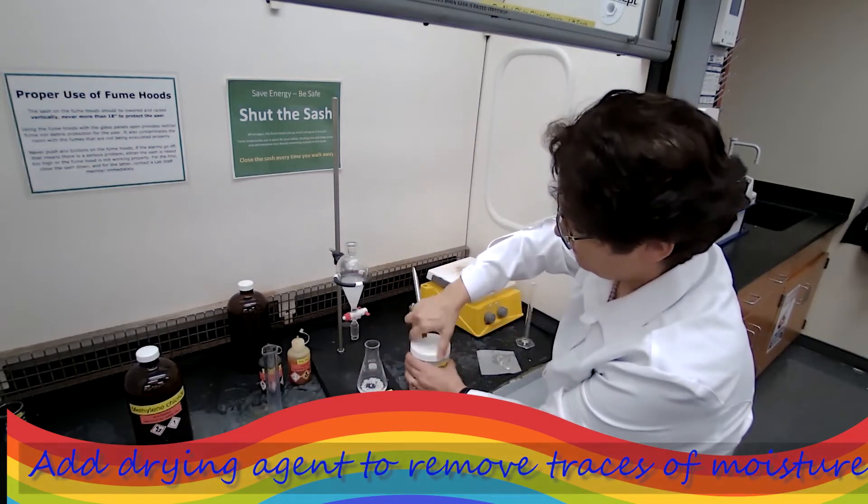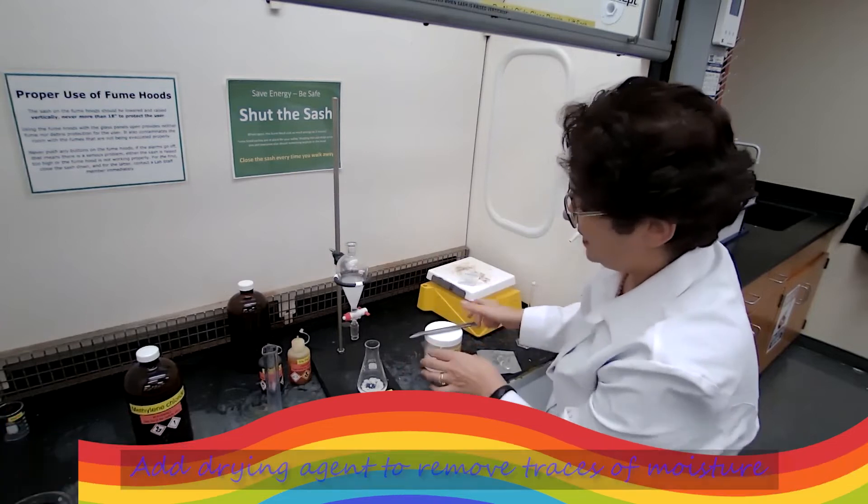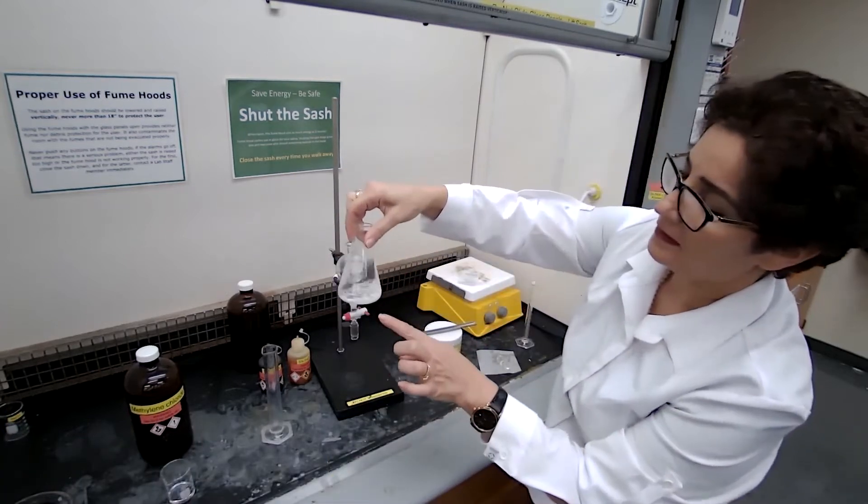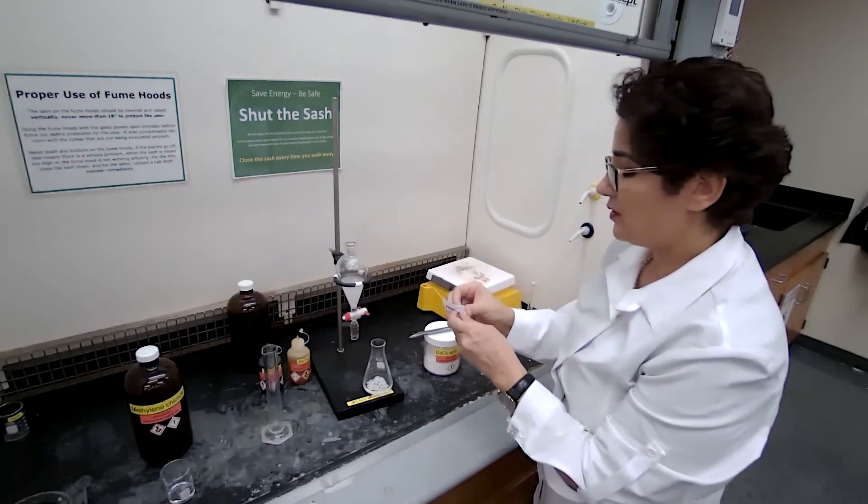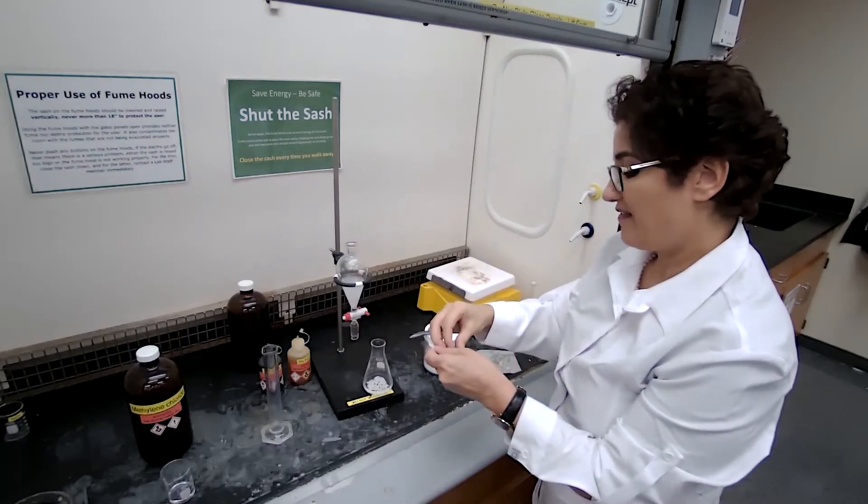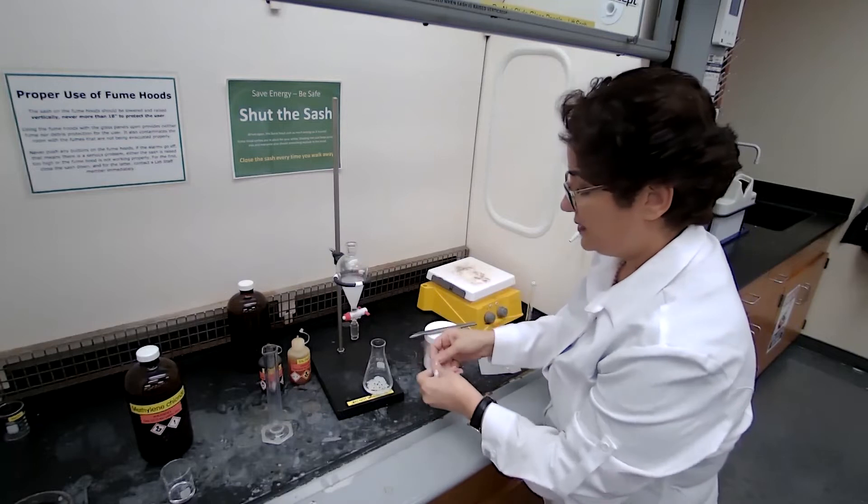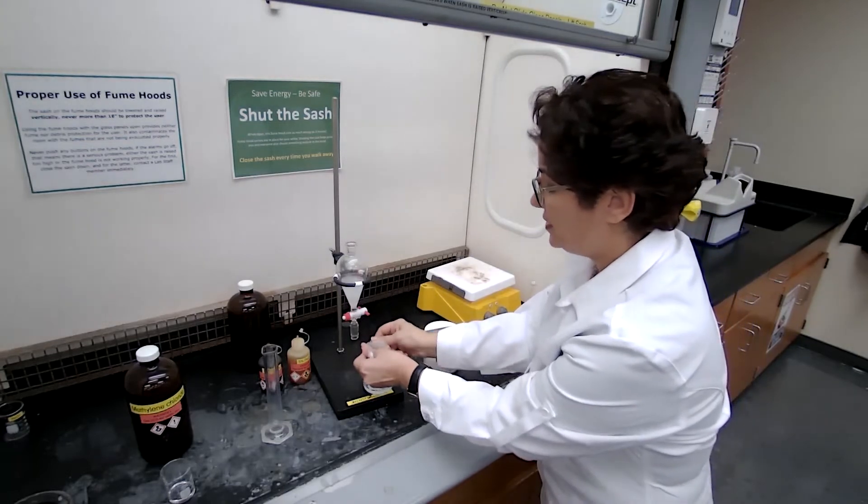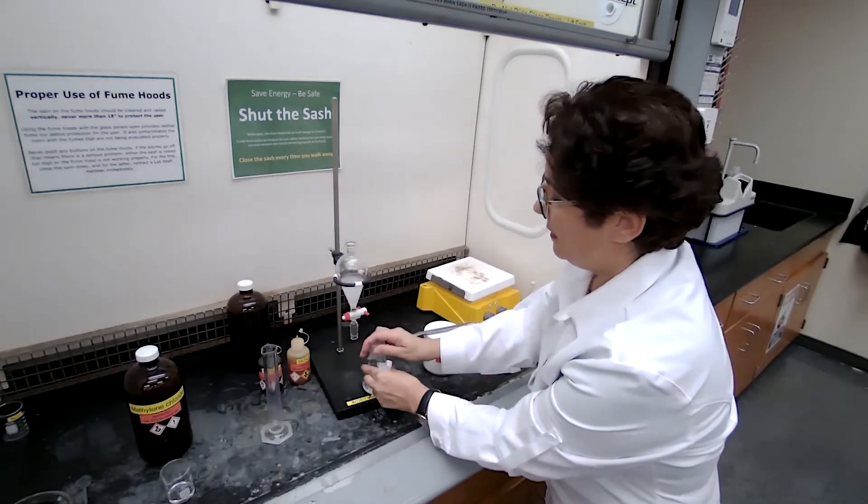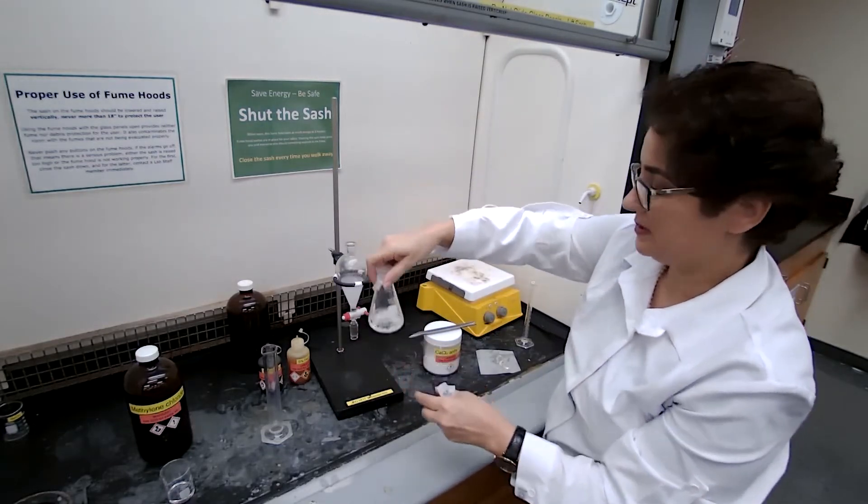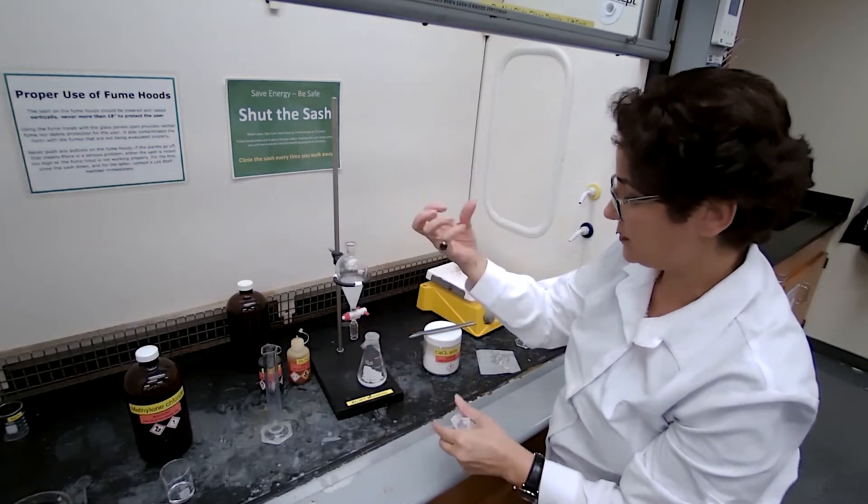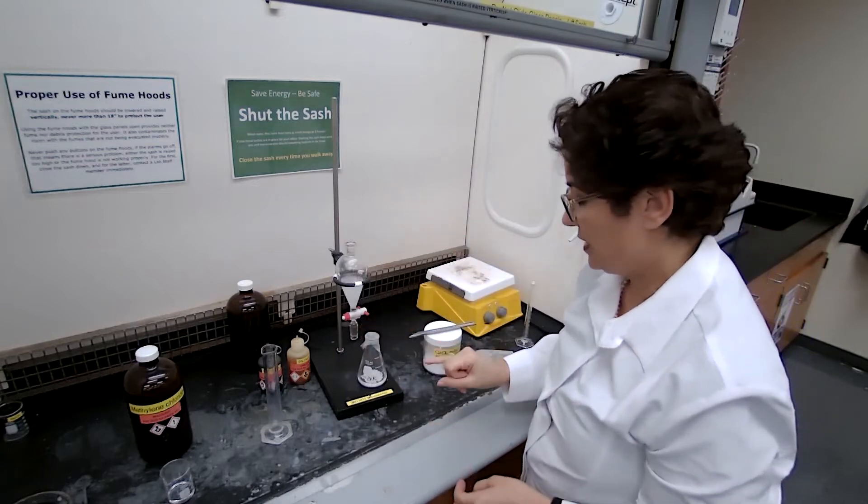That's enough because they are moving around. I'm going to cover the flask. Wait for three to five minutes for it to absorb the moisture. It's going to cover it and wait until the drying agent does the job and absorbs all the moisture.